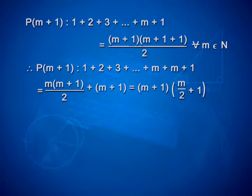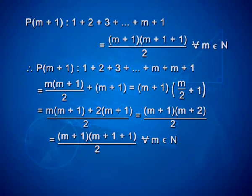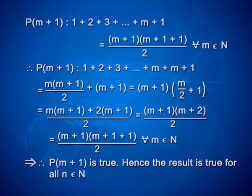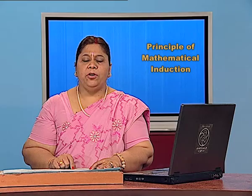As we already have an expression for 1 plus 2 plus 3 plus ... plus m, this could be written as m into m plus 1 by 2, plus m plus 1. Now taking m plus 1 common, we simplify this as m plus 1 into m by 2 plus 1. On taking LCM, we get m plus 1 into m plus 2 by 2, which equals m plus 1 into m plus 1 plus 1 upon 2. That implies p of m plus 1 is true. Hence, the result is true for all n belonging to N.